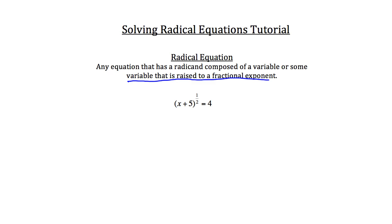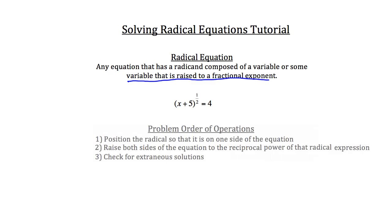There are rules in dealing with radical equations. The typical order of operations is: step one, position the radical so that it's on one side of the equation — in our case, that means positioning the variable raised to a fractional exponent. Anything raised to the 1/2 power is the same as taking the square root. The denominator of the fractional exponent becomes the index of the root, and the numerator is the power that everything under the root is raised to. When it's raised to 1, we don't need to do anything, since anything raised to the 1 power is itself.